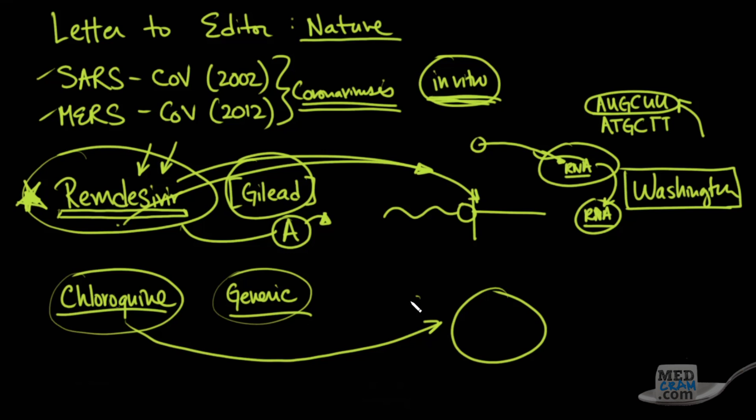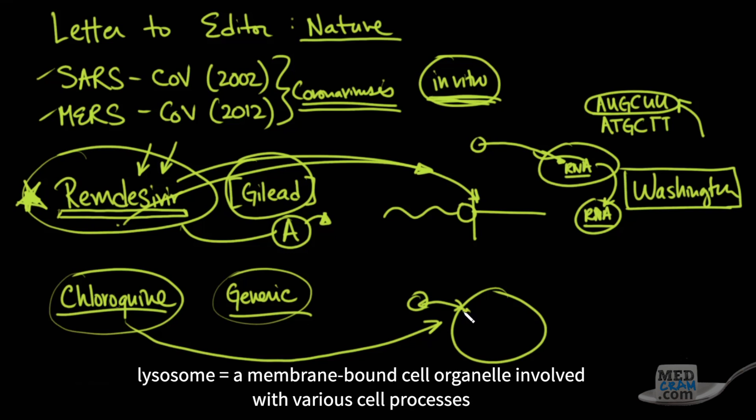Well, you've got the cell, you've got the virus. There's a special pH that these lysosomes have to be before these things can merge. And what chloroquine does is it raises the pH of those lysosomes, preventing these things from merging. So it's possible that you could prevent viral particles from infecting other cells.